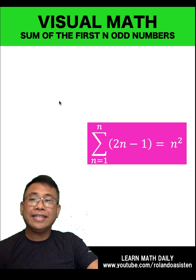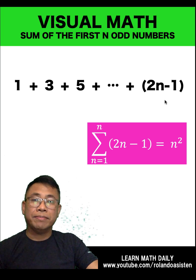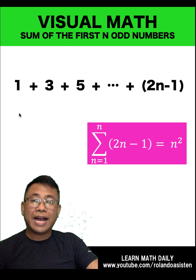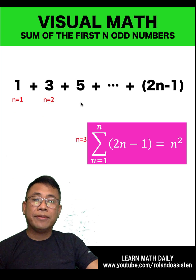Let's start by writing down the sum of the first n odd numbers. We have 1 plus 3 plus 5 until 2n minus 1, where n represents a counting number. Here, our n is 1. Here, our n is 2. Here, our n is 3. And here, our n is n.